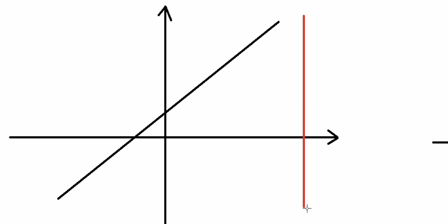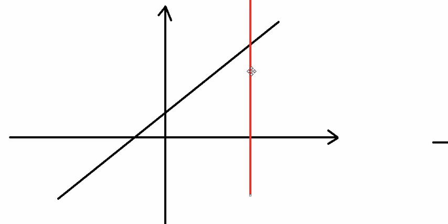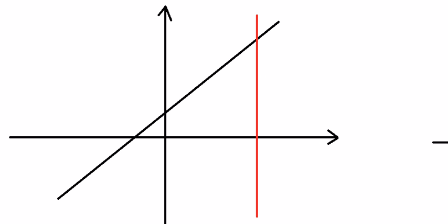First I need to draw the red line here. This is about the vertical line. If we move this line from here to here, we can see that the black line and the red line intersect at only one point. So it means they pass the vertical line test.